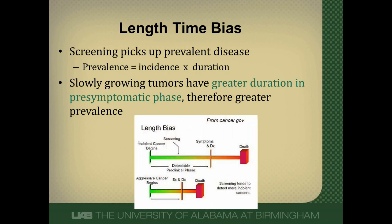If we look at this graphically, here we have an indolent cancer. Down here at the bottom, we have an aggressive cancer. This line across the bottom is the clinical course. This orange vertical bar is where symptoms develop and a diagnosis is made. You can see in an indolent cancer it has a longer preclinical phase, and therefore a greater chance of being detected by screening than this aggressive tumor, which has a much shorter preclinical phase, and therefore a shorter time that it can be detected by screening.